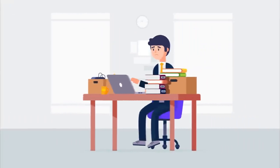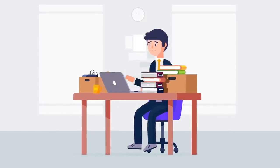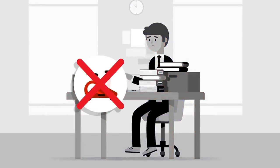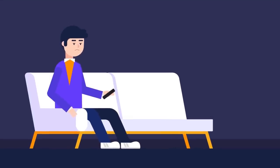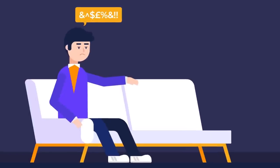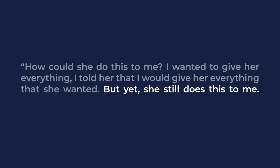The next few months would prove to be the worst months of his life. Because he was so heartbroken, he started to perform worse at work. He stopped exercising. He stopped staying in contact with his friends and family. He would spend his nights in front of the TV cursing his girlfriend's name. He would ask himself, how could she do this to me? I wanted to give her everything. I told her that I would give her everything that she wanted. But yet, she still does this to me. This woman ruined my life.